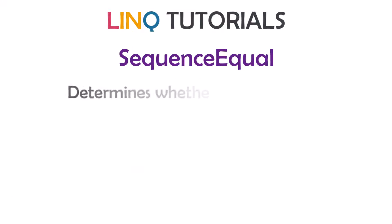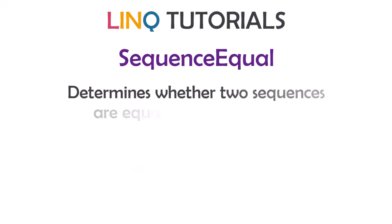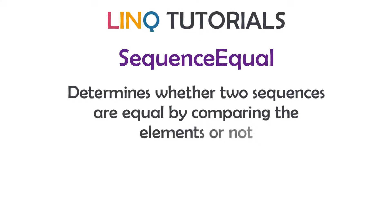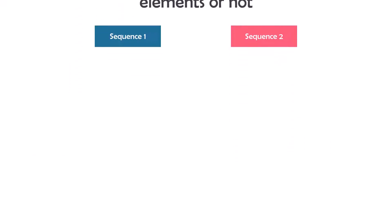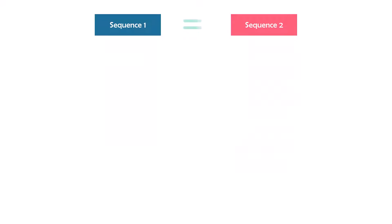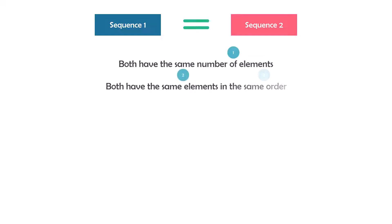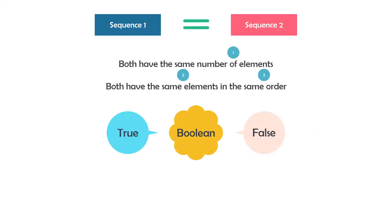SequenceEqual determines whether two sequences are equal by comparing their elements. It means we have two sequences and we want to check if both are the same. Two sequences are the same if both have the same number of elements and also the same elements in the same order. The result of this operator is of type boolean — if both sequences are the same, we get true, else we get false.